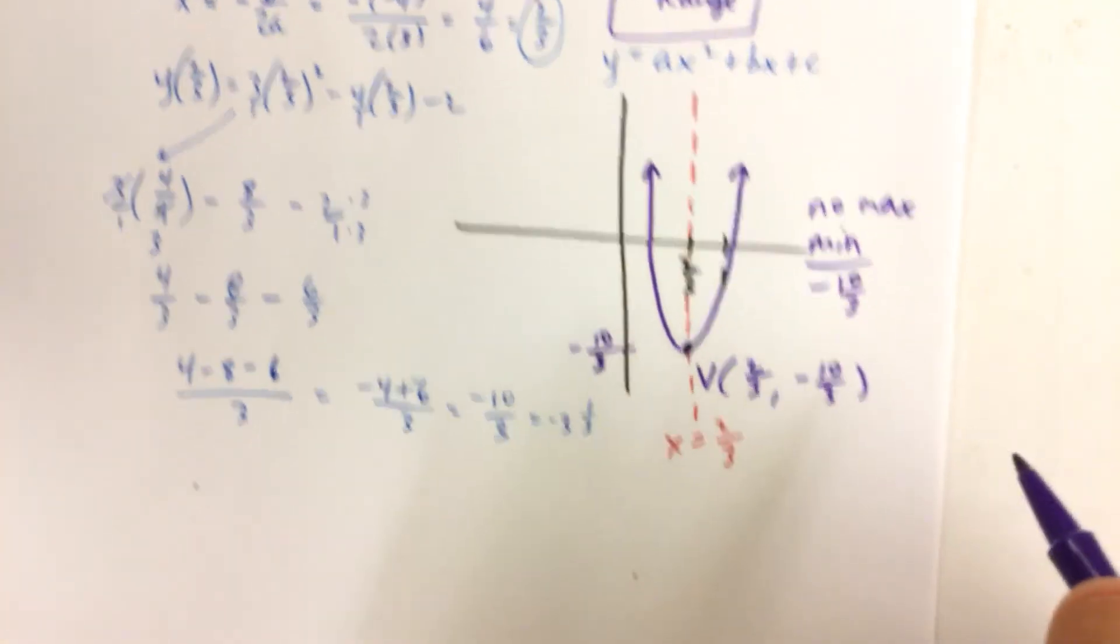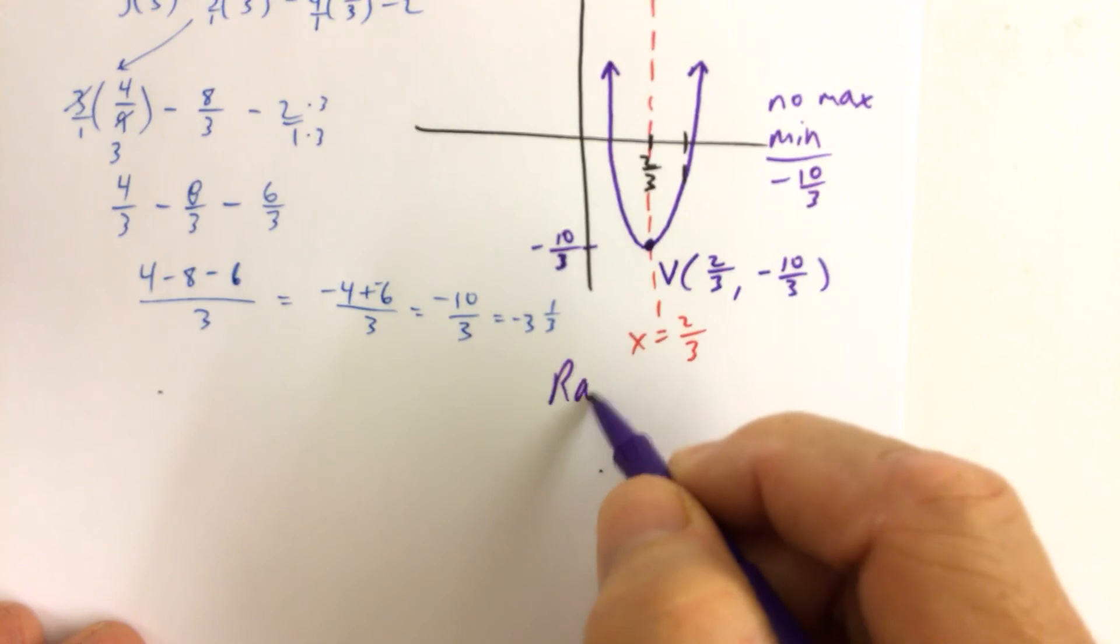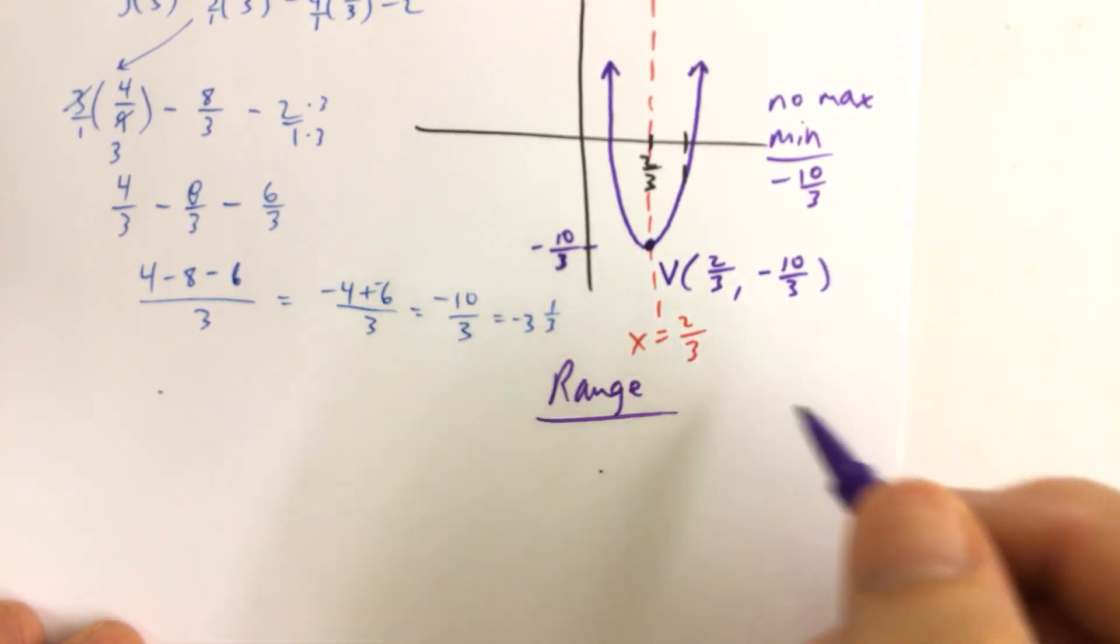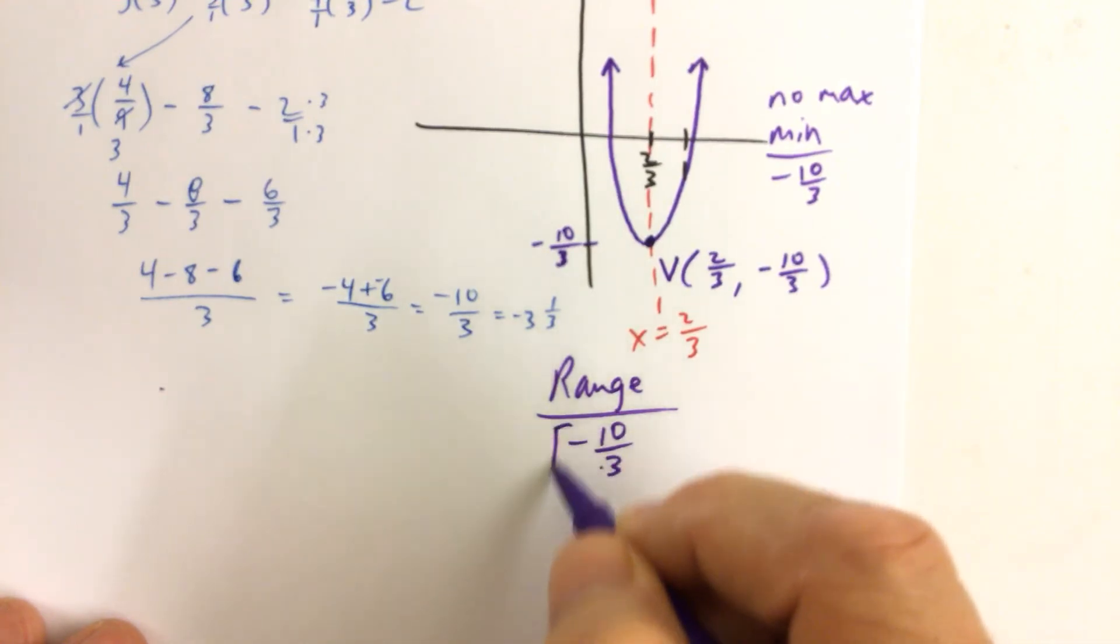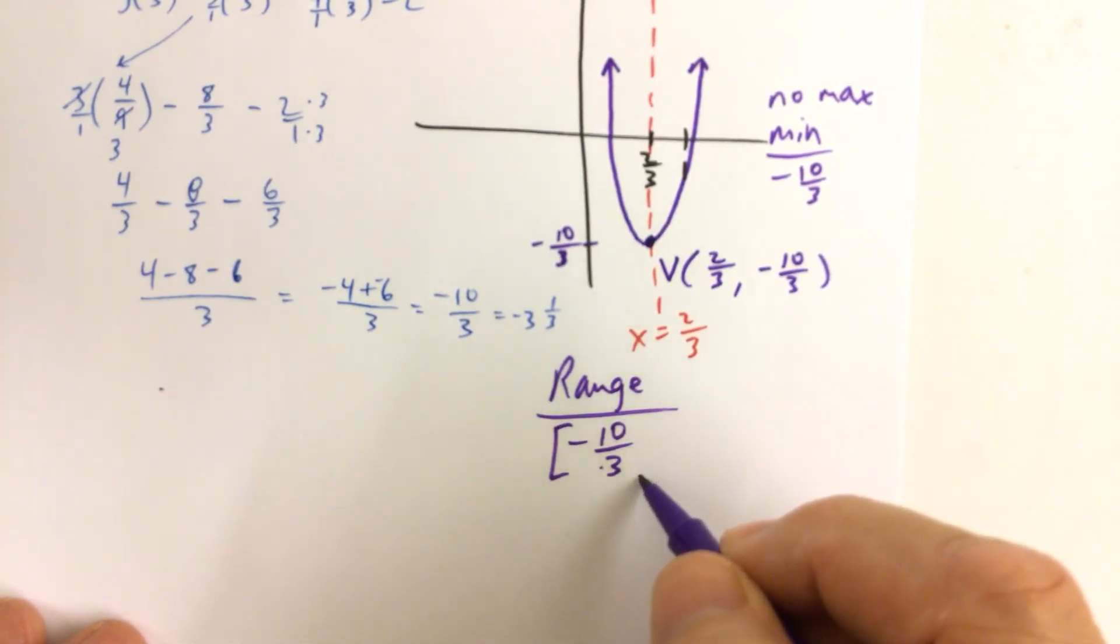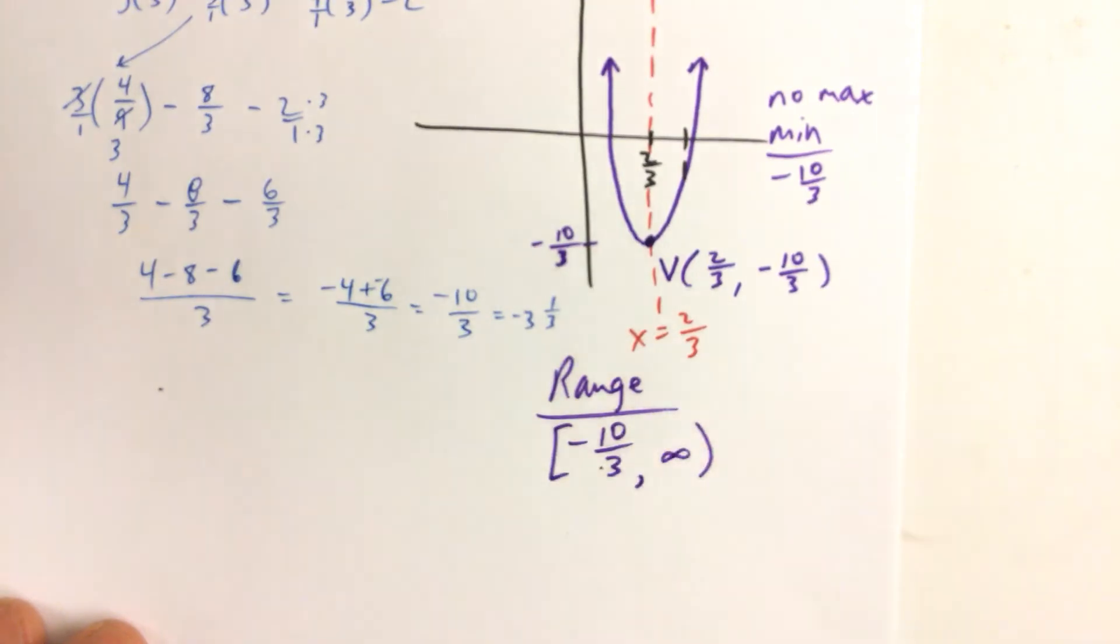Which means that the range, which represents the lowest y value to the highest y value, the range would be from negative 10 thirds all the way through infinity. There's no highest y value, but the lowest y value is negative 10 thirds. That's it.